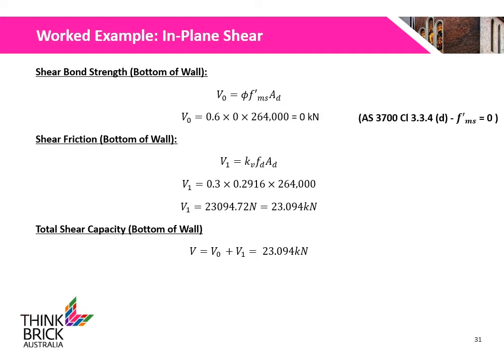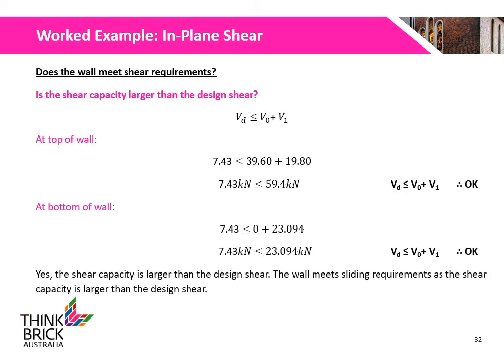The shear bond strength at the bottom of the wall is 0, as the brick course rests on a DPC. Shear friction at the bottom of the wall is calculated to be 23.094 kN. The total shear capacity is calculated to be 23.094 kN. The shear capacity for both locations satisfies the design shear. As a result, the wall meets the sliding requirements and is okay for shear.